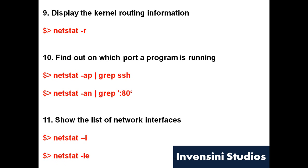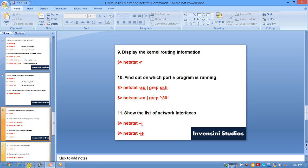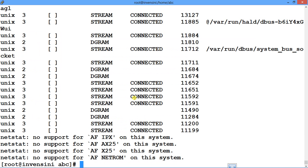These are very helpful while developing applications, and if some application is not behaving as expected, these are the things you need to look into. Similarly, if you want to show the list of interfaces, you say -i, and if you want more extended detail, you say -ie.